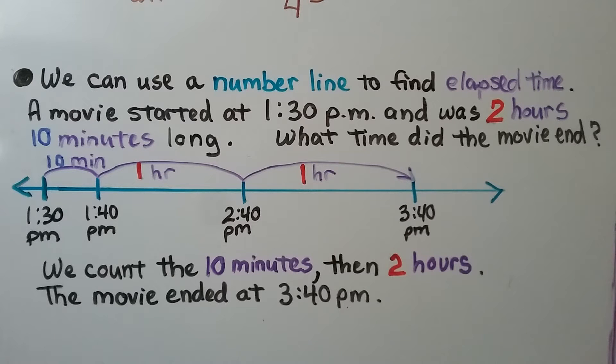So we have a start time of 1:30 PM and we know it was two hours and ten minutes long. On our number line, we start at 1:30 PM and we jump 10 minutes. And that brings us to 1:40 PM.